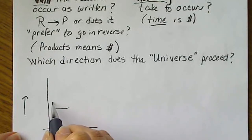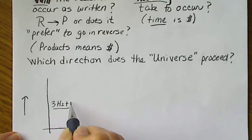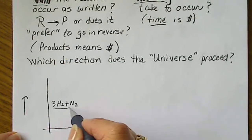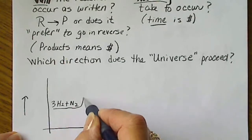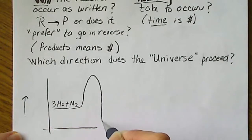And if we start with reactants here, maybe we can put 3H2 plus N2. We looked at this quite a bit in the Haber process.